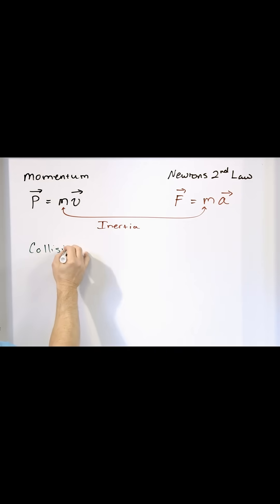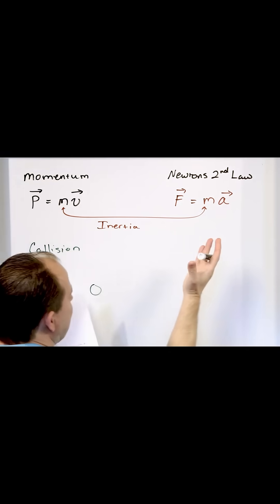So in a collision, you can think of collision like two rocks hitting each other or two cars hitting each other. Before the collision, if you have this thing moving this direction, and then you have some stationary thing like this, and they're going to collide,